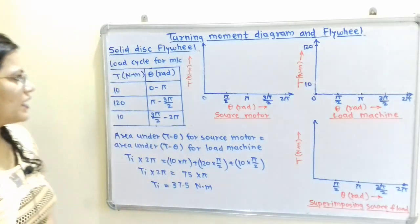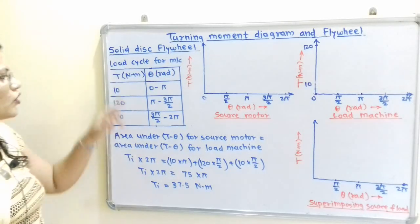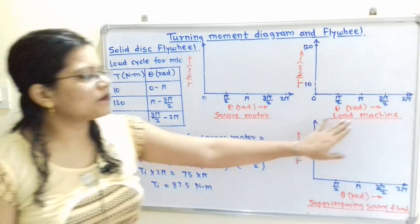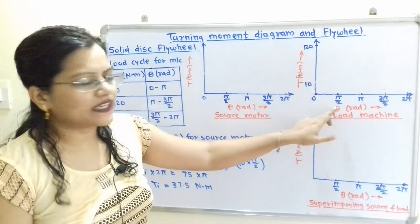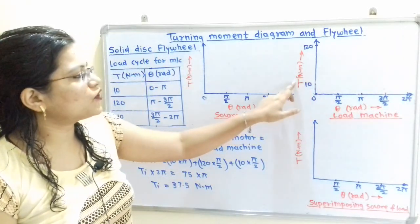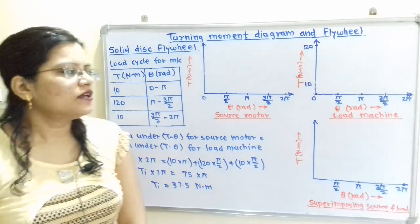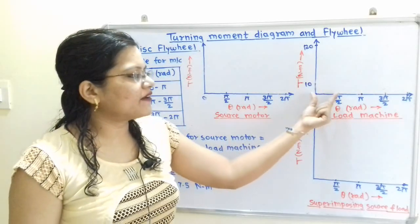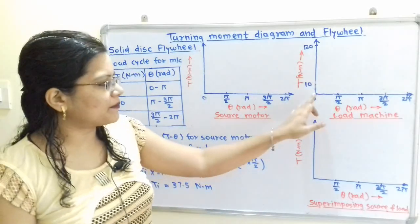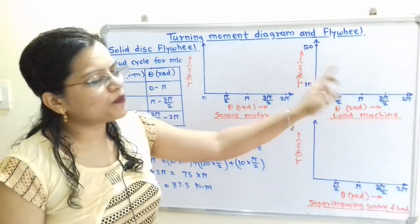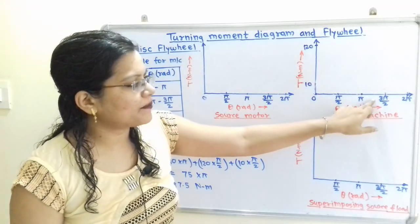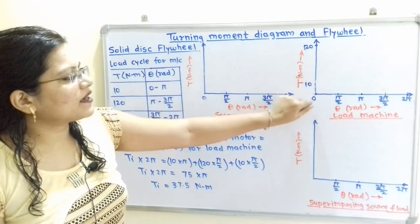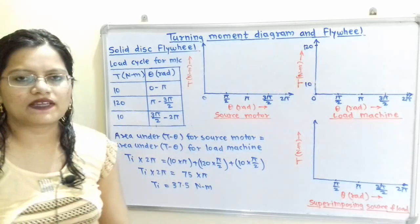Moving to the given data, the load cycle for the machine is mentioned — torque in Nm and θ in rad. To draw the turning moment diagram for the load machine, we plot crank angle θ in rad on the horizontal axis and torque in Nm on the vertical axis. Taking a suitable scale, we mark equal distances for angles 0, π/2, π, 3π/2, and 2π on the horizontal axis, and plot values 10 and 120 on the vertical axis.